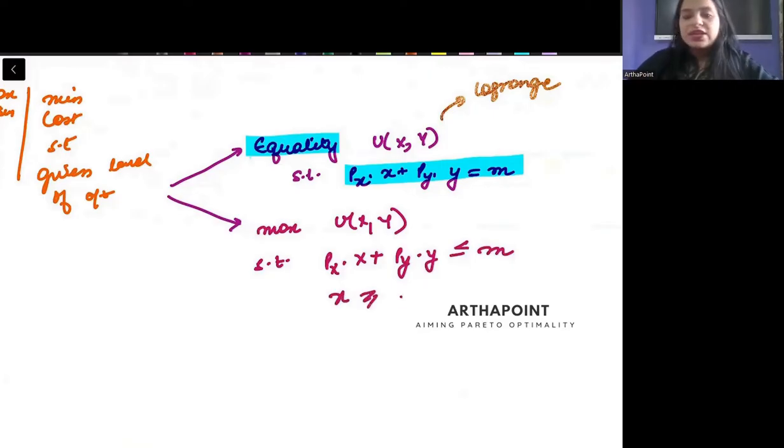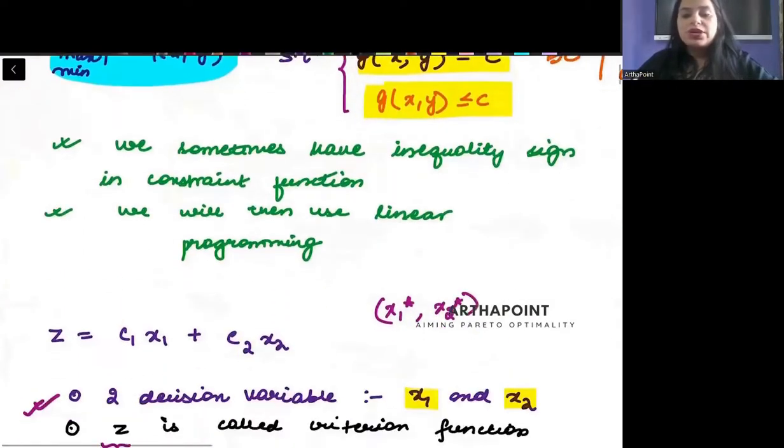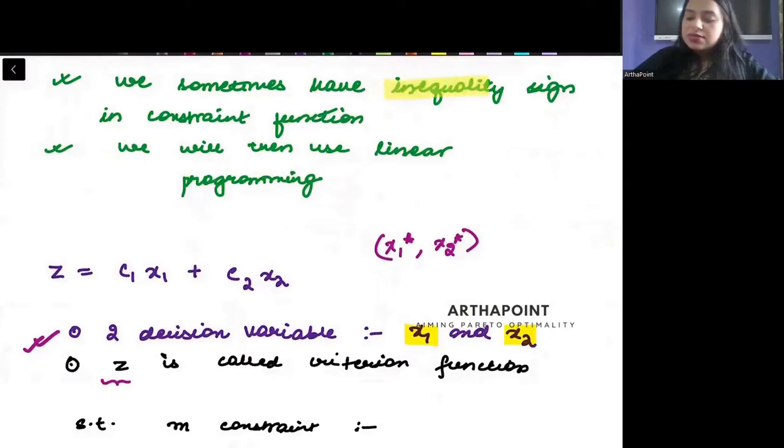I tell you x greater than equal to 0, y greater than equal to 0. So if I give you such constraints, I give you an inequality constraint, then in such cases where you have unequal constraints, the best thing that can be done is that you do linear programming.